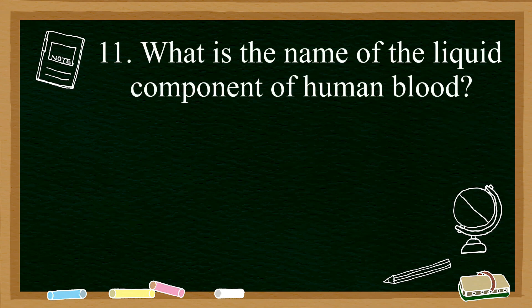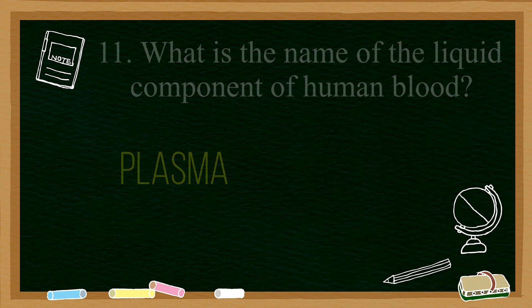Eleven: what is the name of the liquid component of human blood? For starters, blood only has four components and the liquid part of it is called plasma.